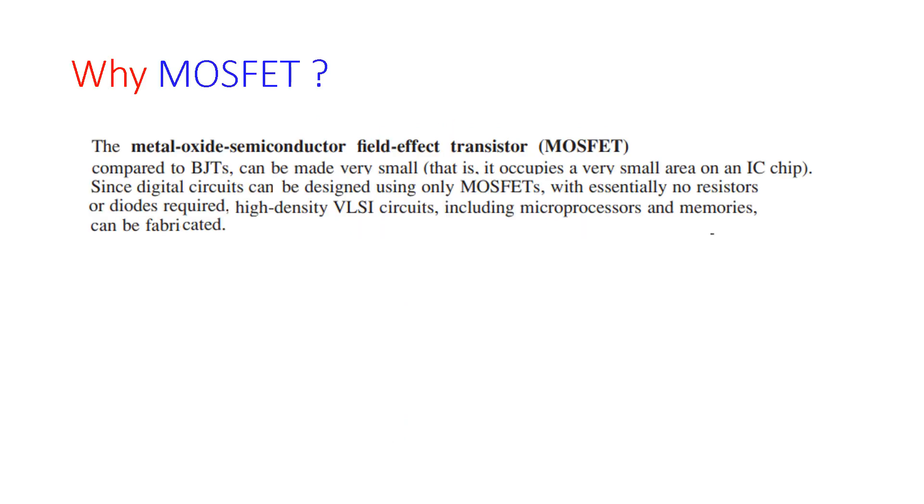Why MOSFET? First of all, the metal oxide semiconductor field effect transistor, which is also known as MOSFET, compared to BJT can be made very small that it occupies a very small area in an IC chip.